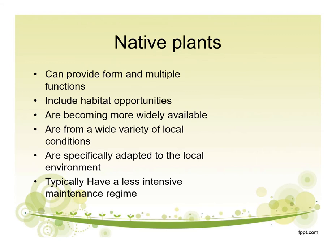Native plants can provide multiple forms and functions, including habitat opportunities. They're becoming more widely available, though for the best selection you'll probably need to buy from a specialty nursery. We have a wide variety of local ecosystem conditions, so these native plants come from mountains, deserts, riparian areas, and dry slopes — specifically adapted to our local environment. Typically, native plants have a less intensive maintenance regime, requiring fewer supplemental inputs like extra water, fertilizers, herbicides, or pesticides.